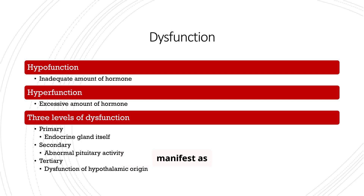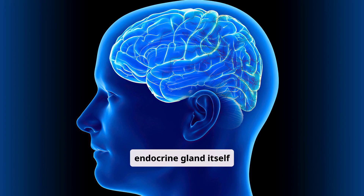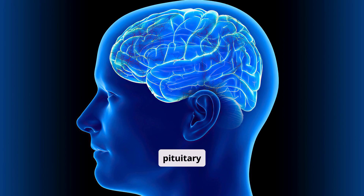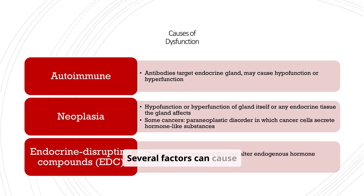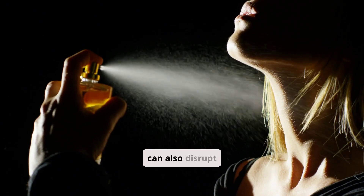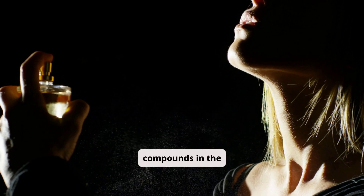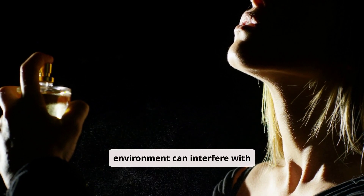Endocrine dysfunction can manifest as hypofunction, meaning too little hormone, or hyperfunction, meaning too much. Dysfunction can occur at three levels: the endocrine gland itself (primary), the pituitary (secondary), or the hypothalamus (tertiary). Several factors can cause endocrine dysfunction, including autoimmune disorders, neoplasia or tumors, and endocrine-disrupting compounds in the environment.